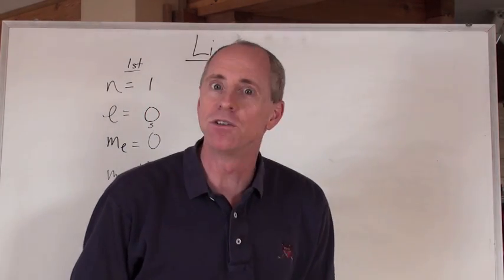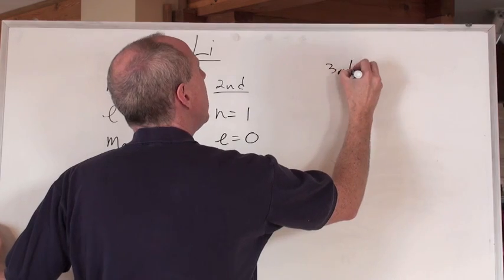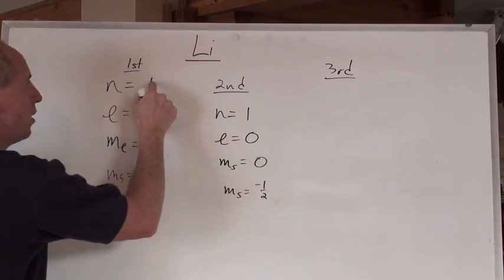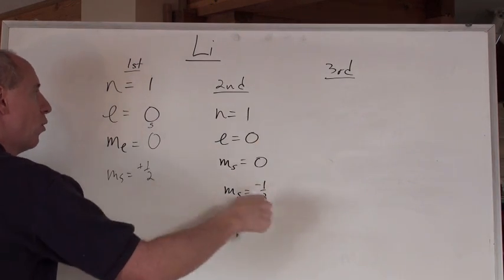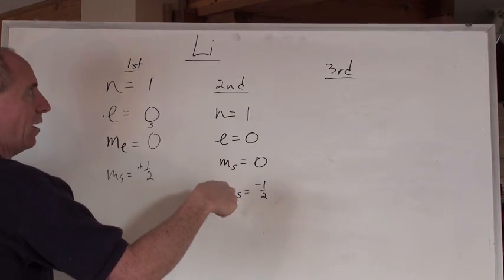But now where's that third electron? The third electron, we are now done with n equals one, because we can't actually have sets of quantum numbers here that are going to be any different.